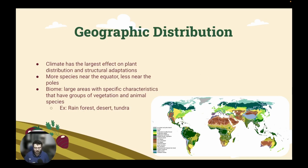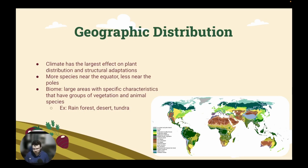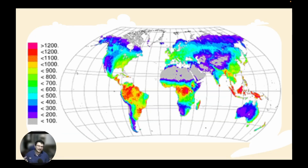If you look at this diagram on the bottom right, you'll notice that we have high diversity in our biomes near the equators and less diversity in our biomes near the poles. A biome is just a large area with specific characteristics. Some examples of biomes are rainforests, deserts, and tundras. And here in Kansas, we are in a prairie biome, or a grass biome, however you want to think of it.